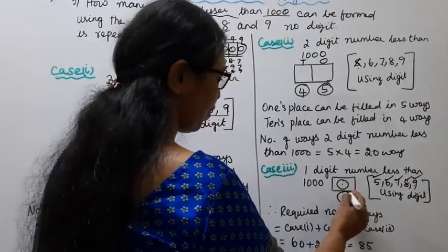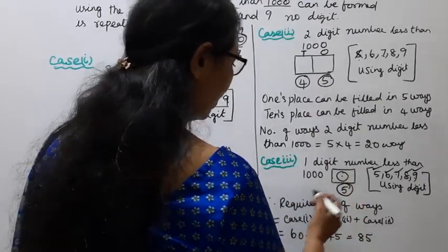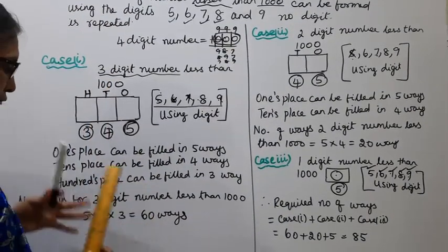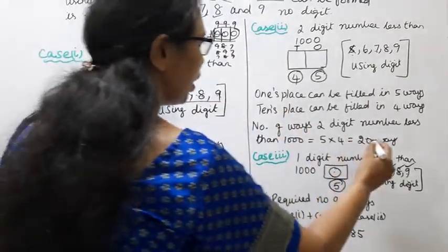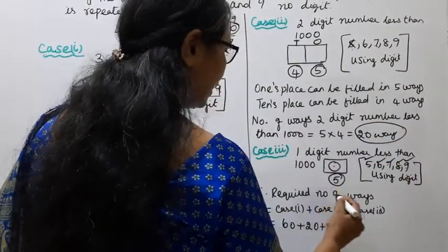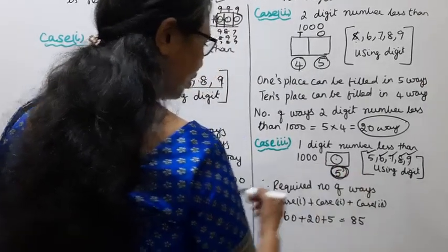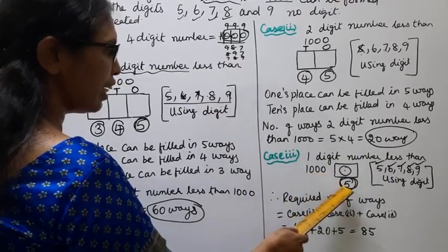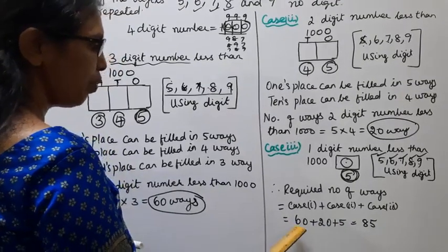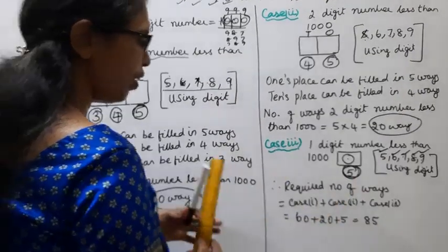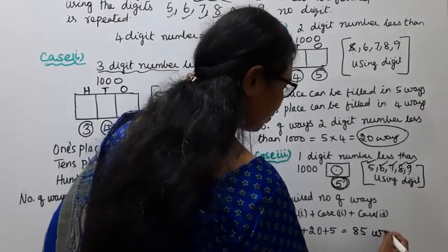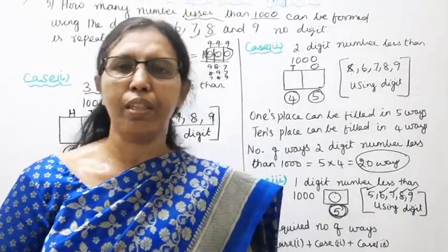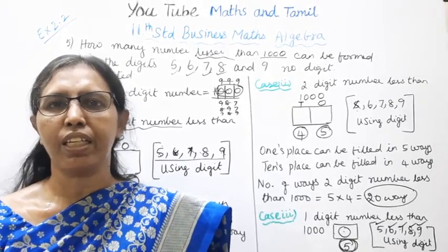Total number of ways: Case 1 gives 60 ways, Case 2 gives 20 ways, Case 3 gives 5 ways. So 60 + 20 + 5 = 85. The answer is 85. Please practice more problems in this channel. Subscribe to the channel and click the notification button.